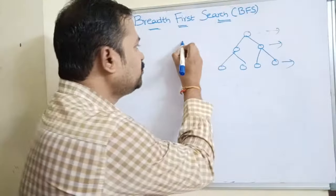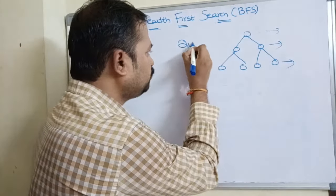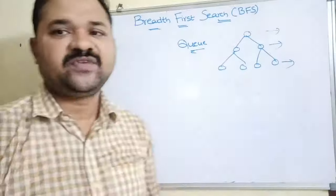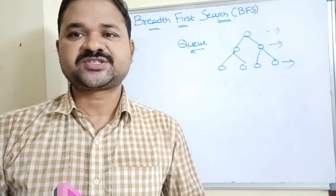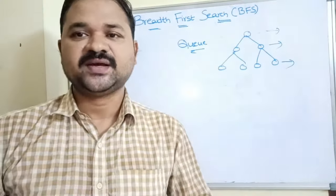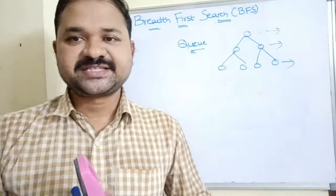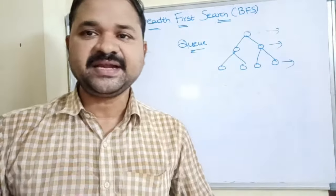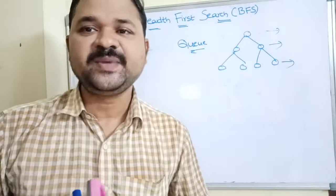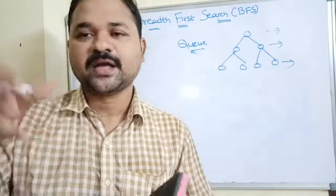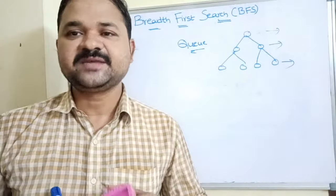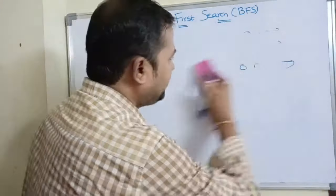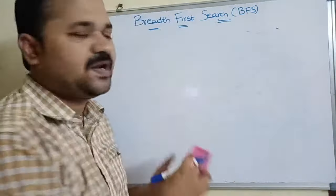In order to implement BFS, we use a data structure called a queue. The queue works on the principle of FIFO — First In, First Out. Insertion should be done from the rear end of the queue, and deletion should be done from the front end of the queue.